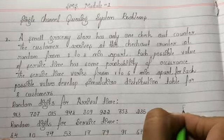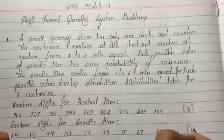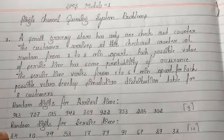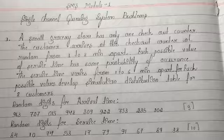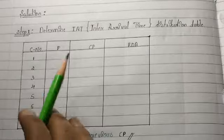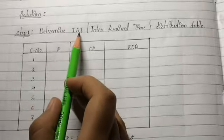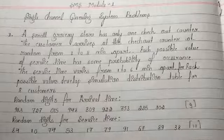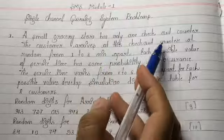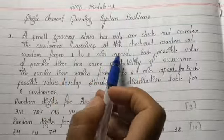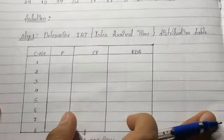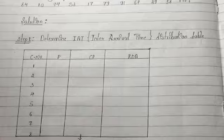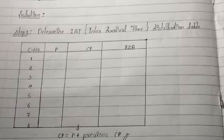Count the number of random digits for arrival time and service time — there are nine terms for arrival and ten for service time, which will help in the solution. Now, the first step is to determine the inter-arrival time distribution table. We need four columns: customer number, probability, cumulative probability, and random digit assignment. Since customers arrive from one to eight minutes apart, we write customer numbers one to eight.